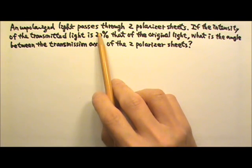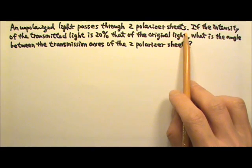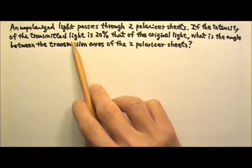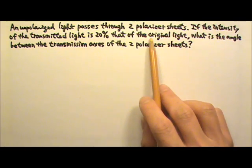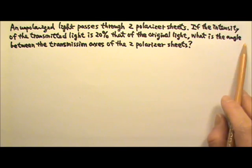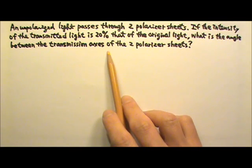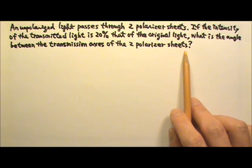An unpolarized light passes through two polarizer sheets. If the intensity of the transmitted light is 20% that of the original light, what is the angle between the transmission axis of the two polarizer sheets?